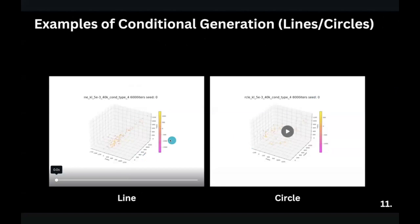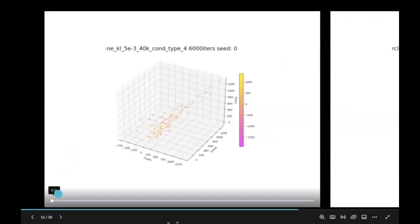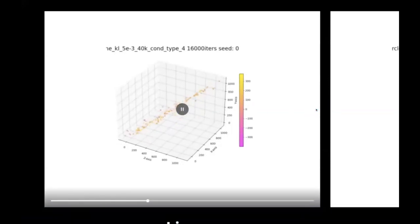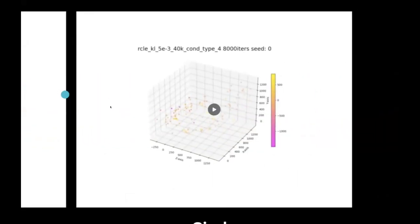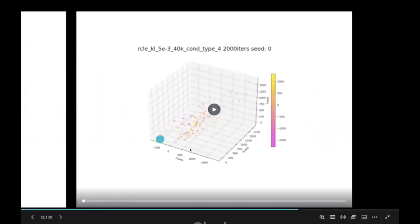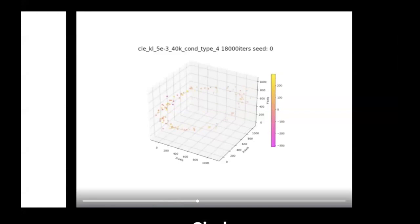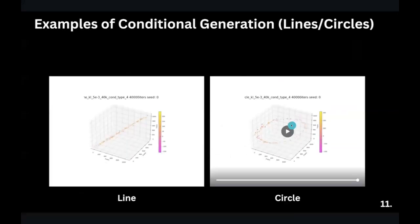Here are the results of generation of simple structures such as lines and circles. We start with a random point cloud and at the end we have a line. For the circle, from a completely random point cloud it generates something similar to an actual circle. We consider this stage to be successfully completed and move on to the next stage: testing on real data.